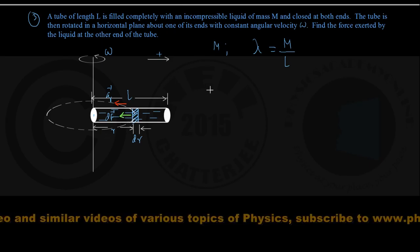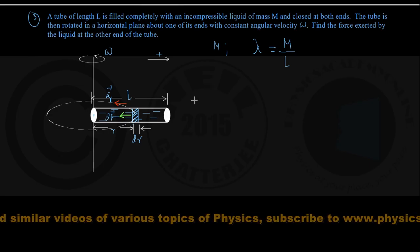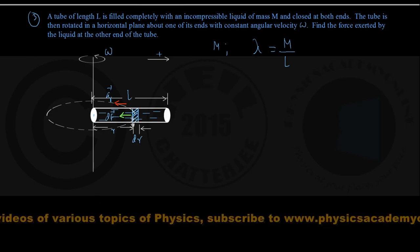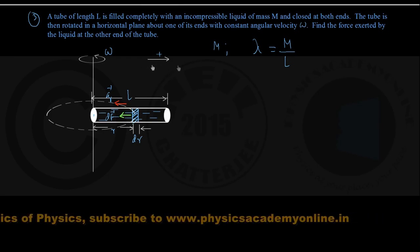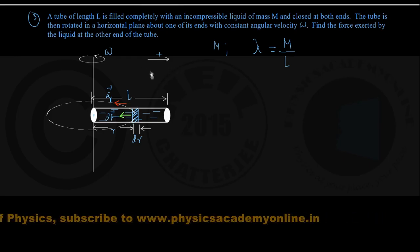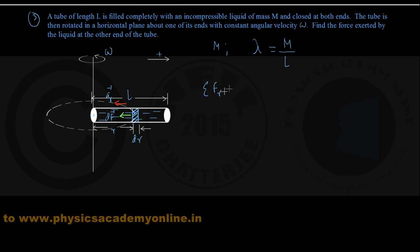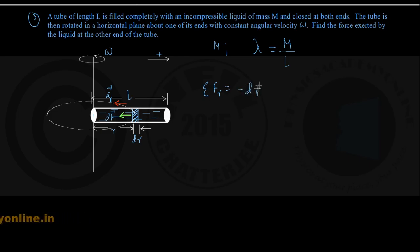We write down the equation of motion for this infinitesimal element of liquid in the radial direction, taking radially outward to be positive. The force DF is pointing to the left, so I take it to be minus DF in scalar notation, because radially inward is taken to be negative.